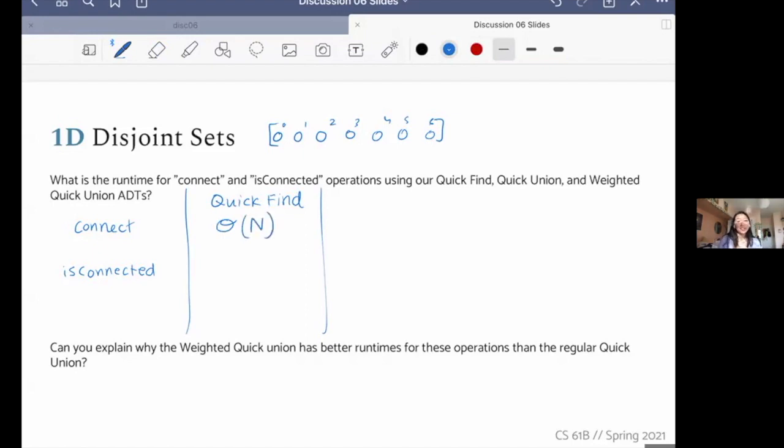Now the is connected here is actually pretty fast, right? If I want to know if two elements are in the same set, let's say I want to know if elements one and five are in the same set, I simply go to those indices in our underlying array. And I'll check and see what the value there is. And if it's the same, that must mean they're in the same set. And so this is actually pretty fast because array access is constant for us. So we can say that this is theta one.